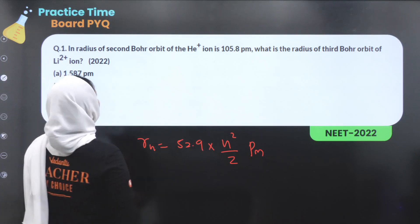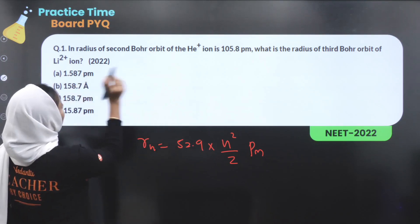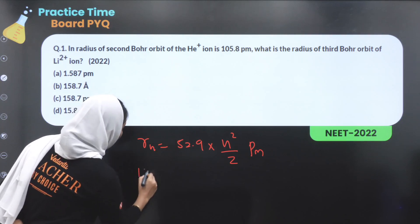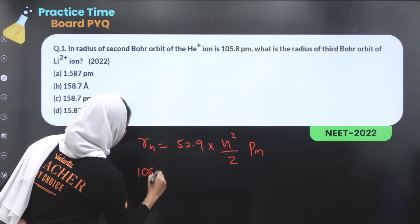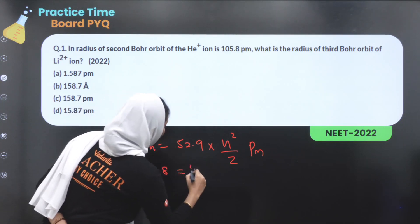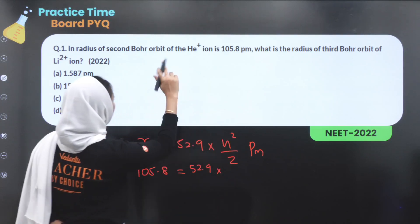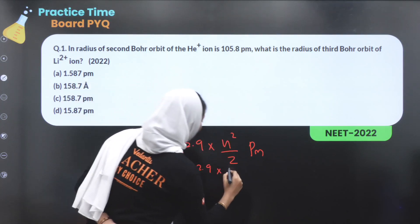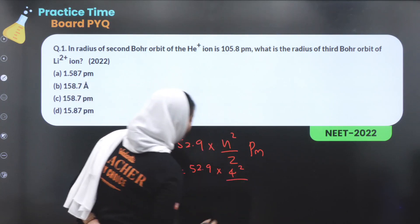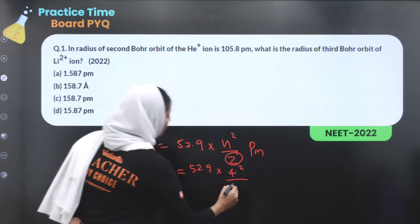For the He⁺ ion in the second Bohr orbit, this gives 105.8 equals 52.9 times 4 (which is 2 squared) divided by 2. Helium's atomic number Z is 2.